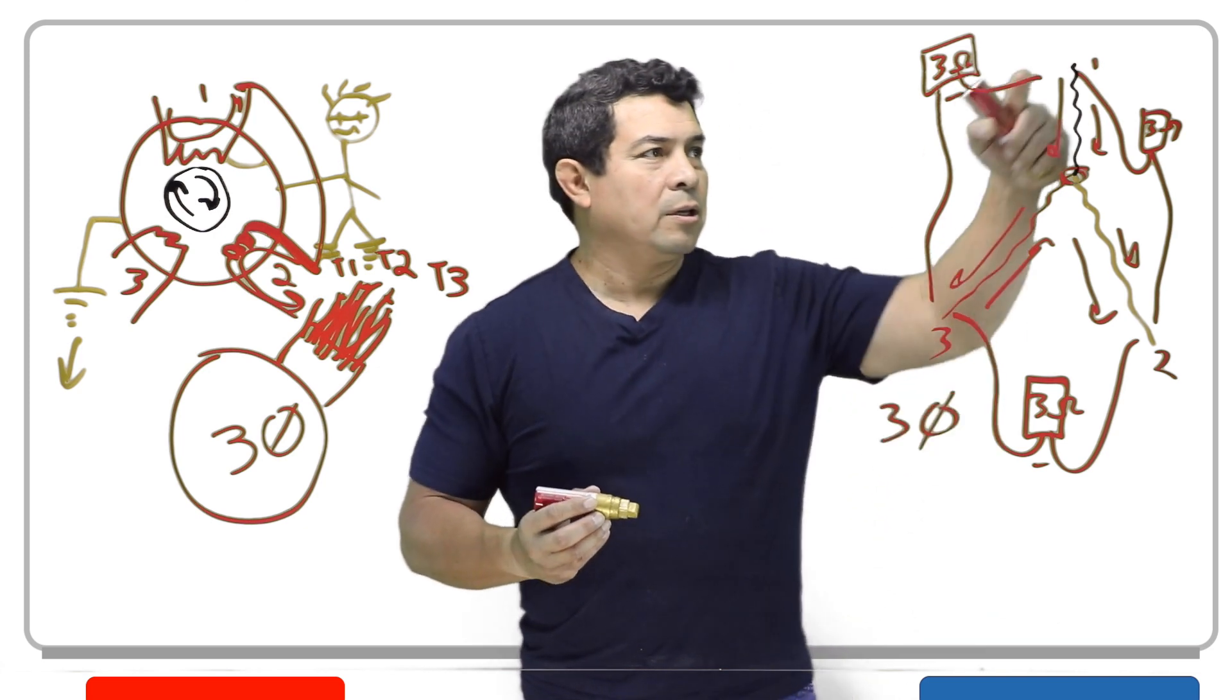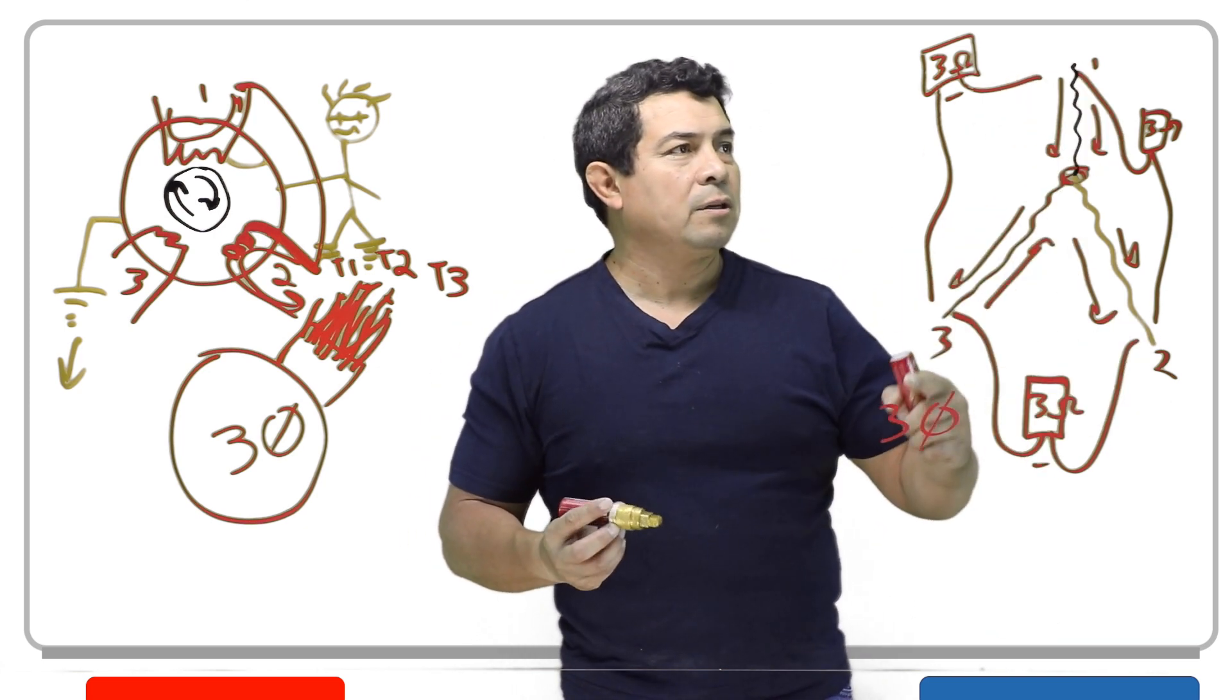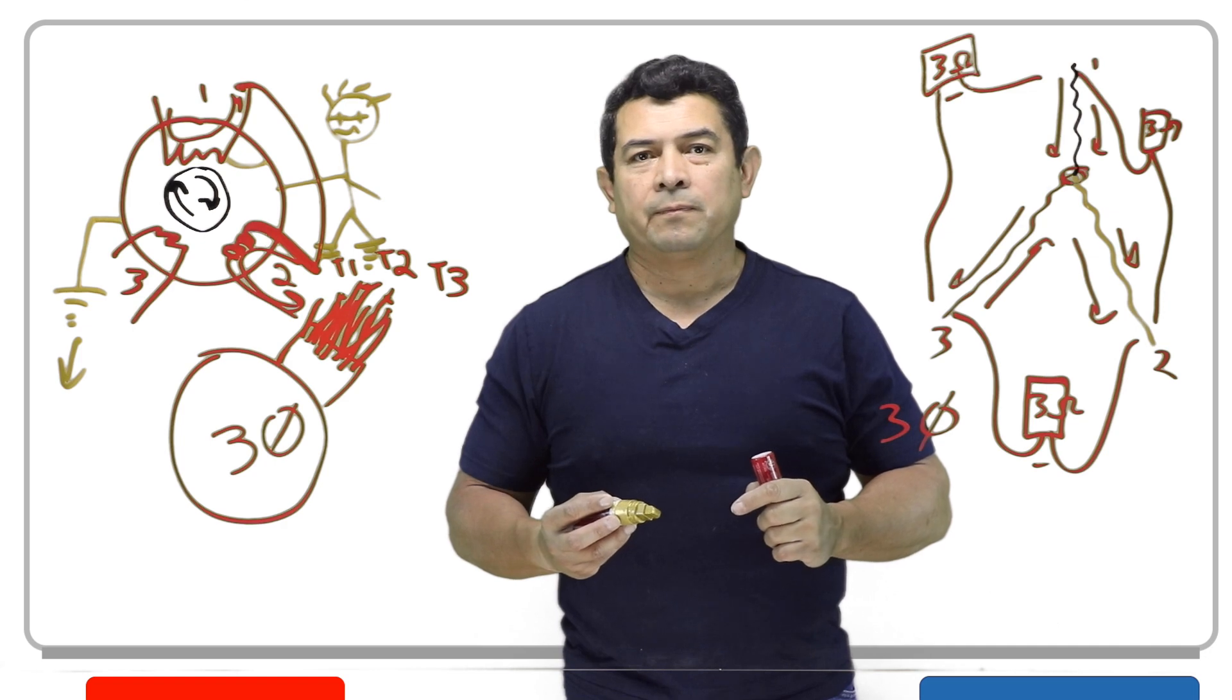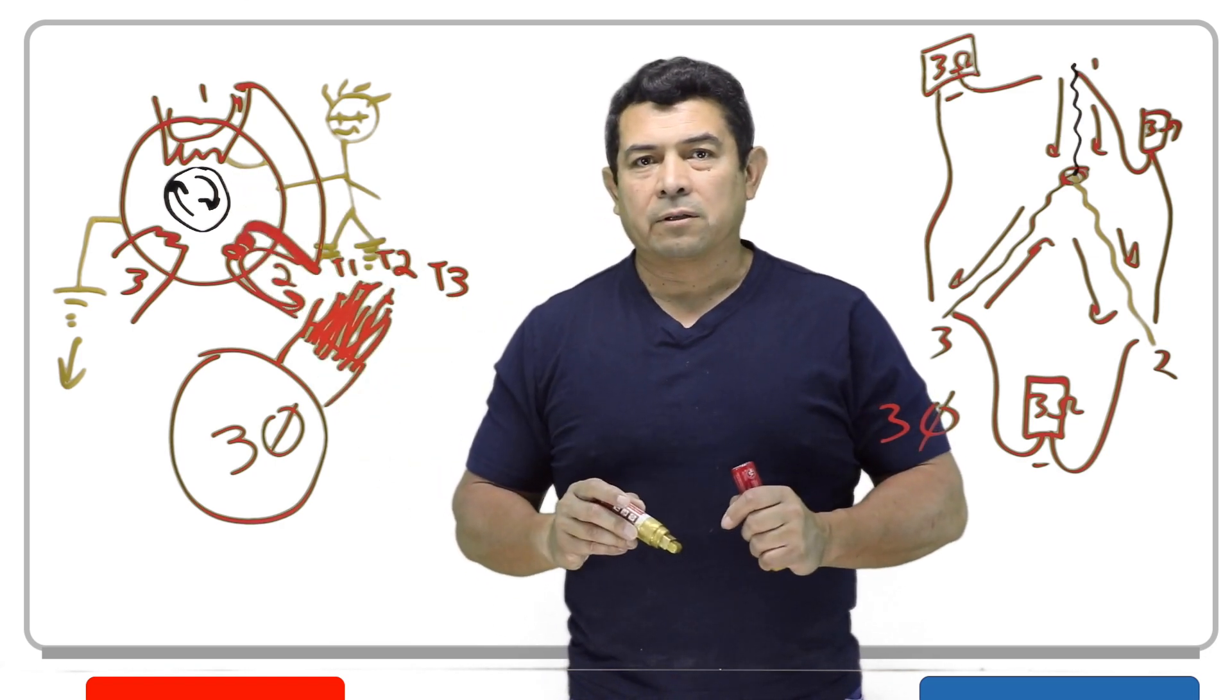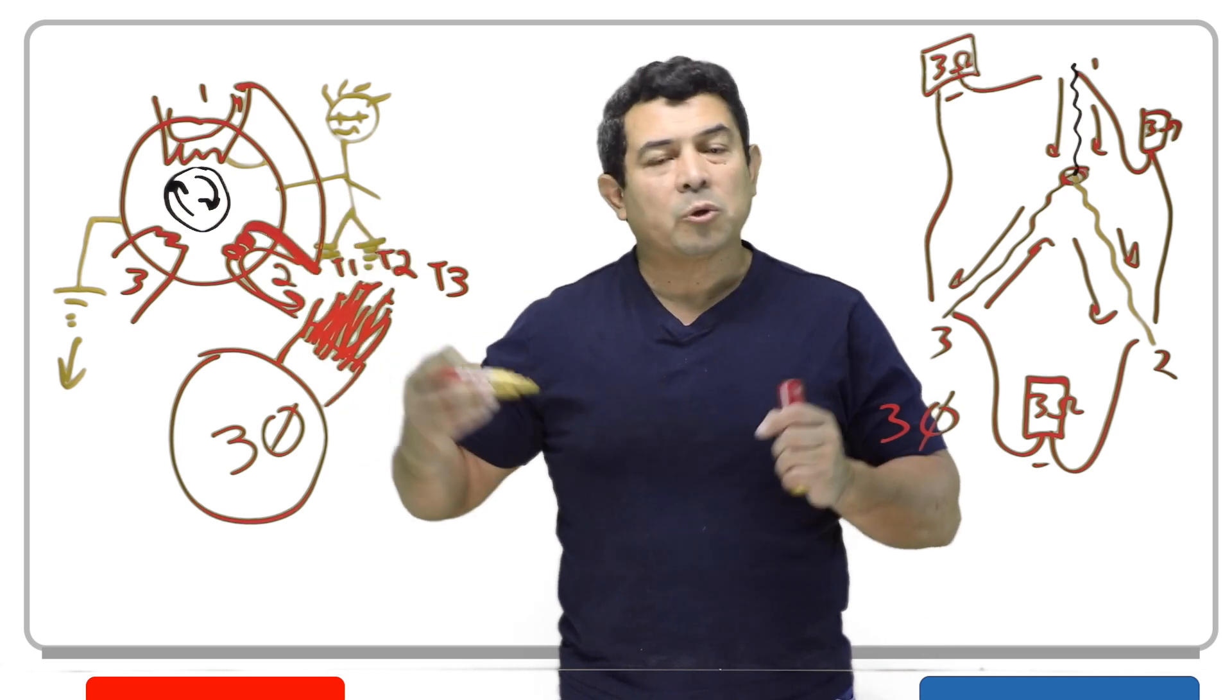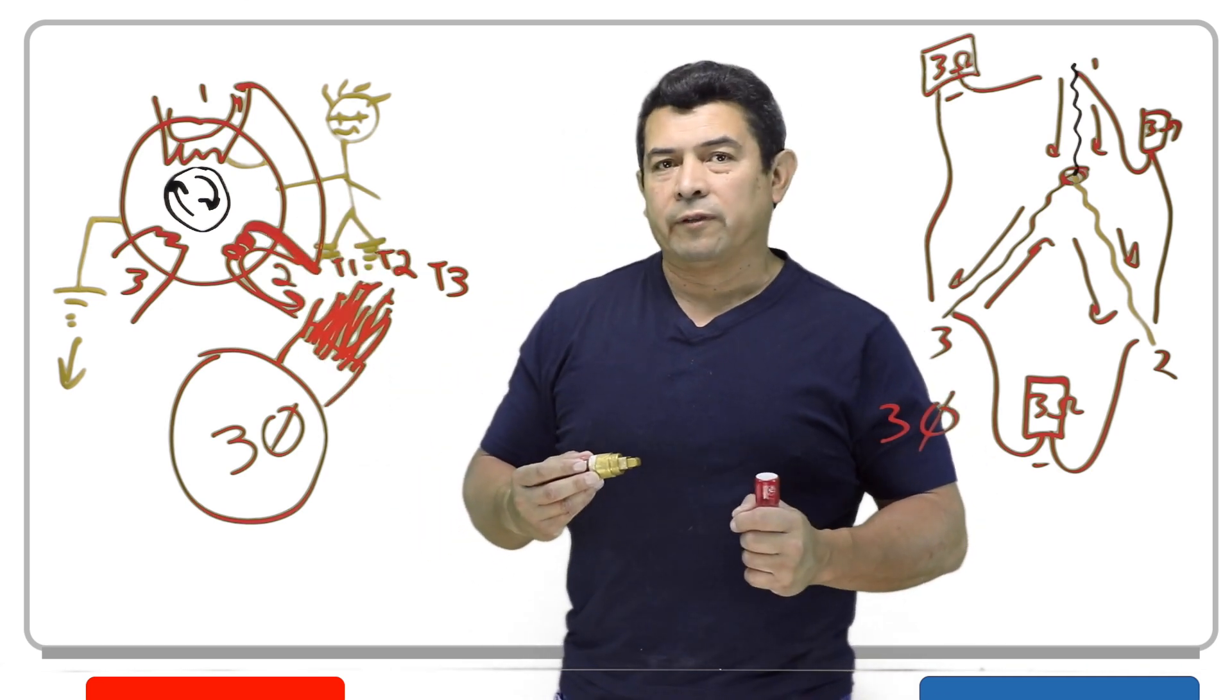So again, check in three-phase motors, T1, T2, and T3. All of the readings should be the same. You should check to the casing to see if it's grounded. If it's going to the casing, most likely it will have tripped the breaker or blown a fuse.